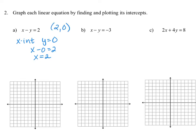The y-intercept happens when x is equal to 0. We take our original equation and replace x with 0 to get 0 minus y is equal to 2. We solve this, and we get negative y is equal to positive 2. So that means y is equal to negative 2, and that corresponds to the point (0, negative 2).